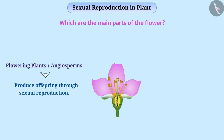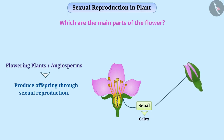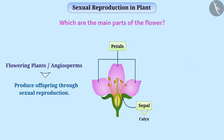The outer part of the flower which looks like green leaves is called sepal. Together the sepals form the calyx. The sepals protect the inner parts when the flower is in the form of a bud. The colourful part of the flower that looks like leaves are called petals. All the petals together are called corolla.